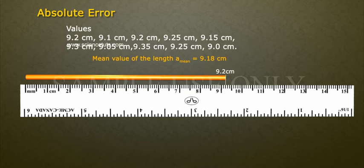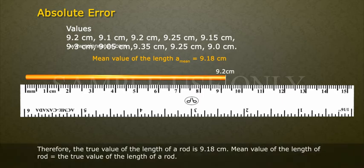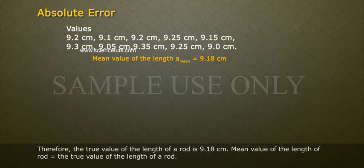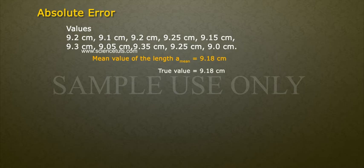Mean value of the length, a_mean, is equal to 9.18 cm. Therefore, the true value of the length of the rod is 9.18 cm. Mean value of the length of rod is equal to the true value of the length of the rod. True value is equal to 9.18 cm.